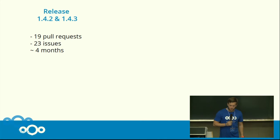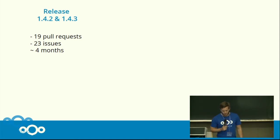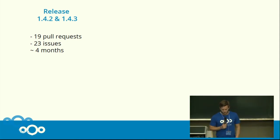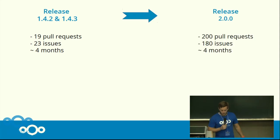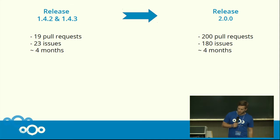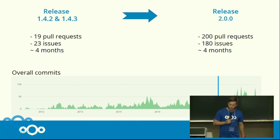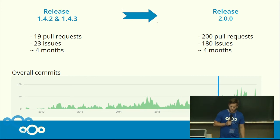Just to compare it to the last release, we had 90 pull requests solved in the four month development cycle with roughly about 23 solved issues. Now within the same development cycle we have roughly about 200 pull requests, and it's still growing, with 180 open issues solved. The blue line marks version 1.0, so we have a really nice and growing overall commit history.